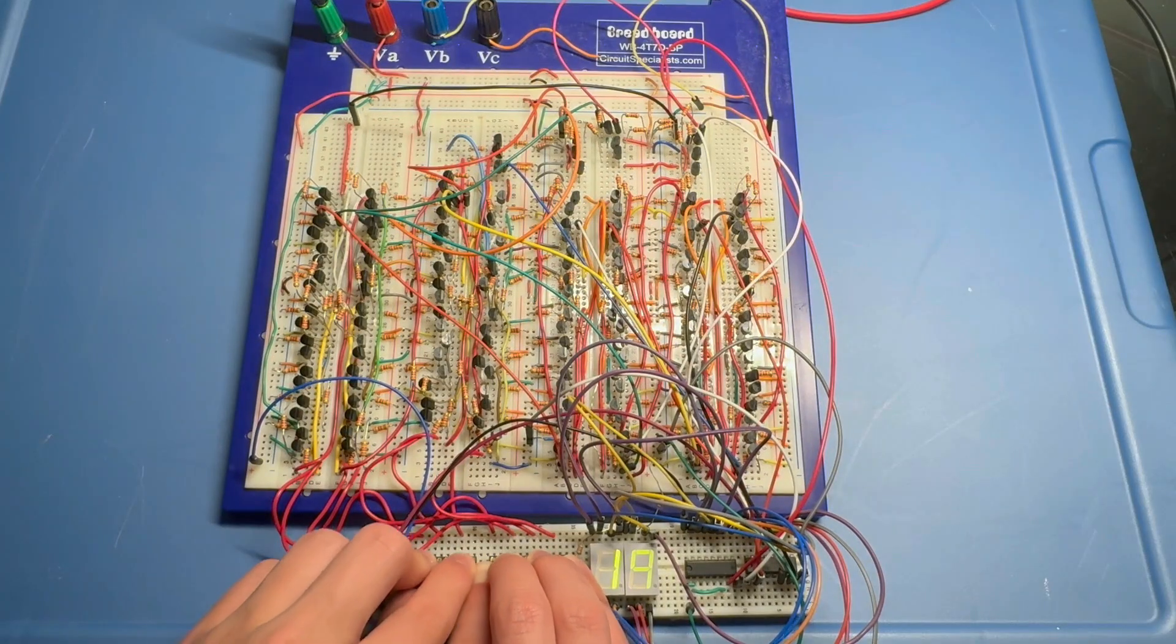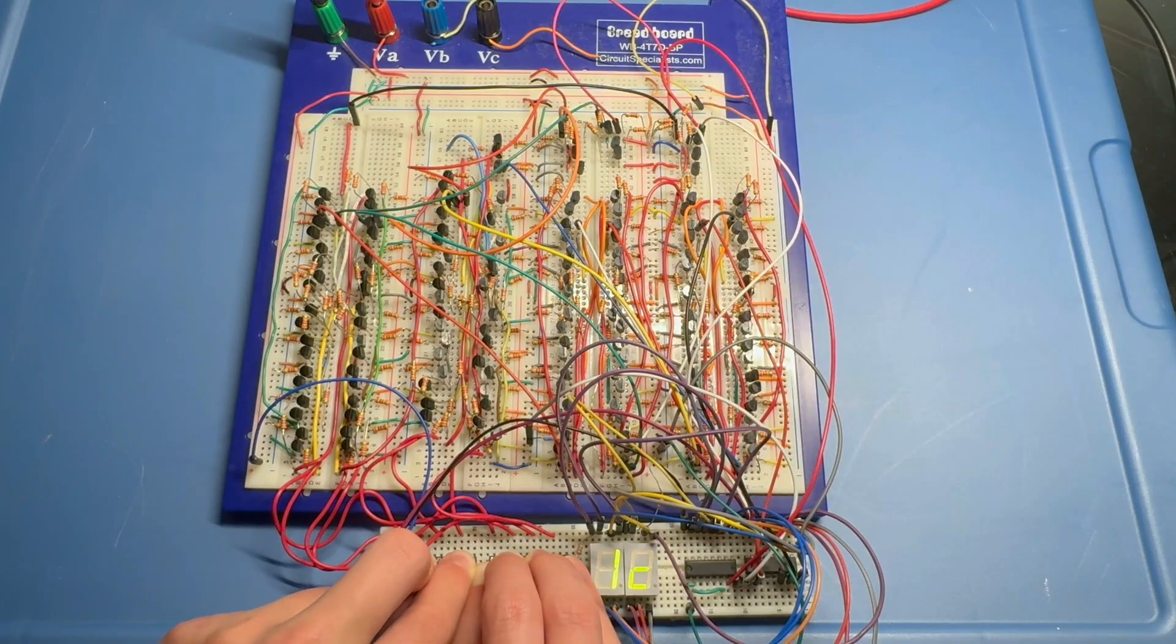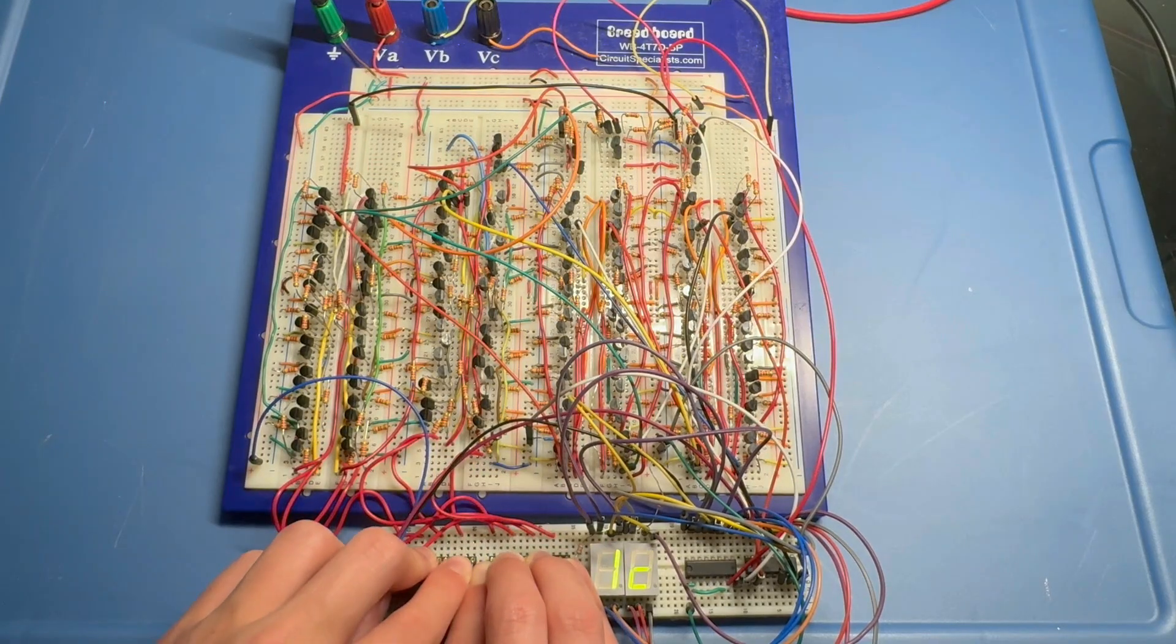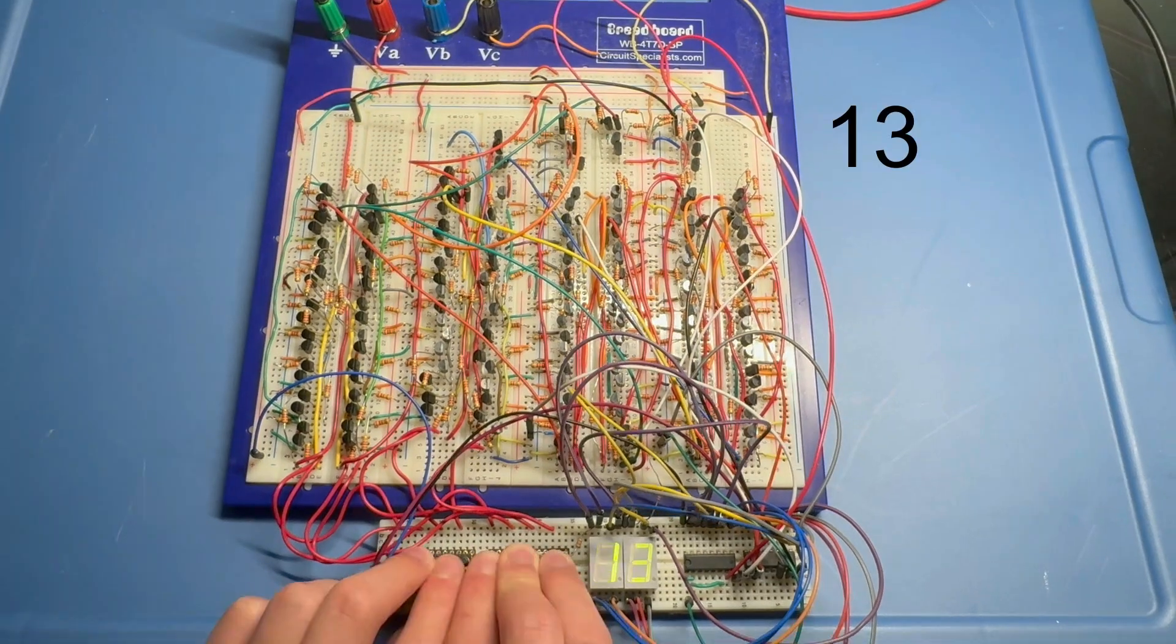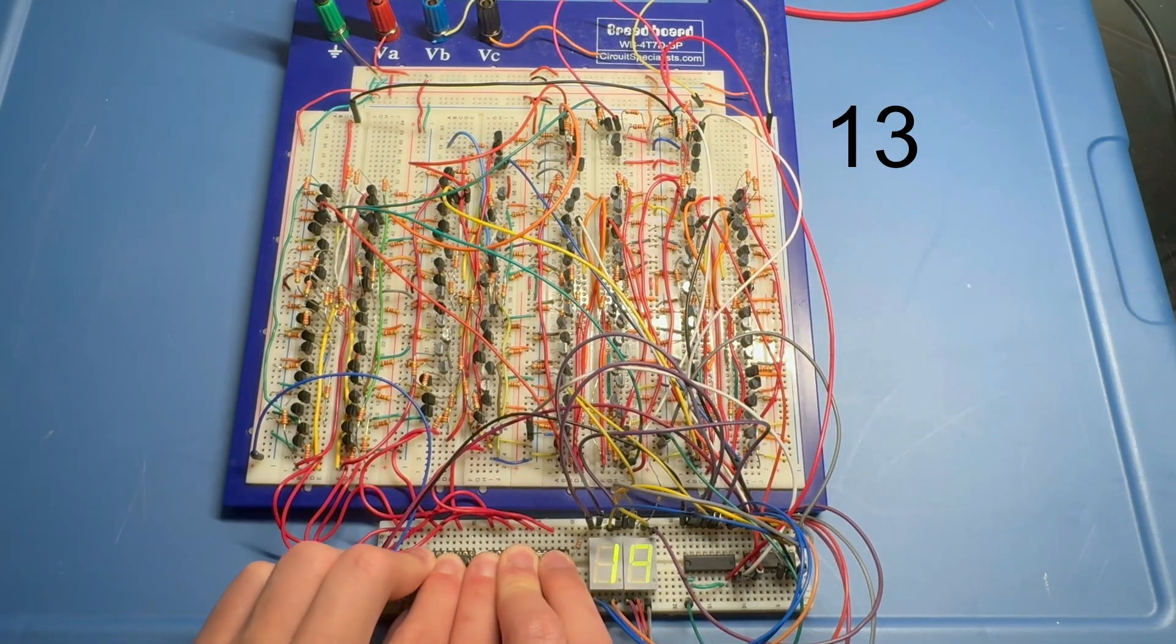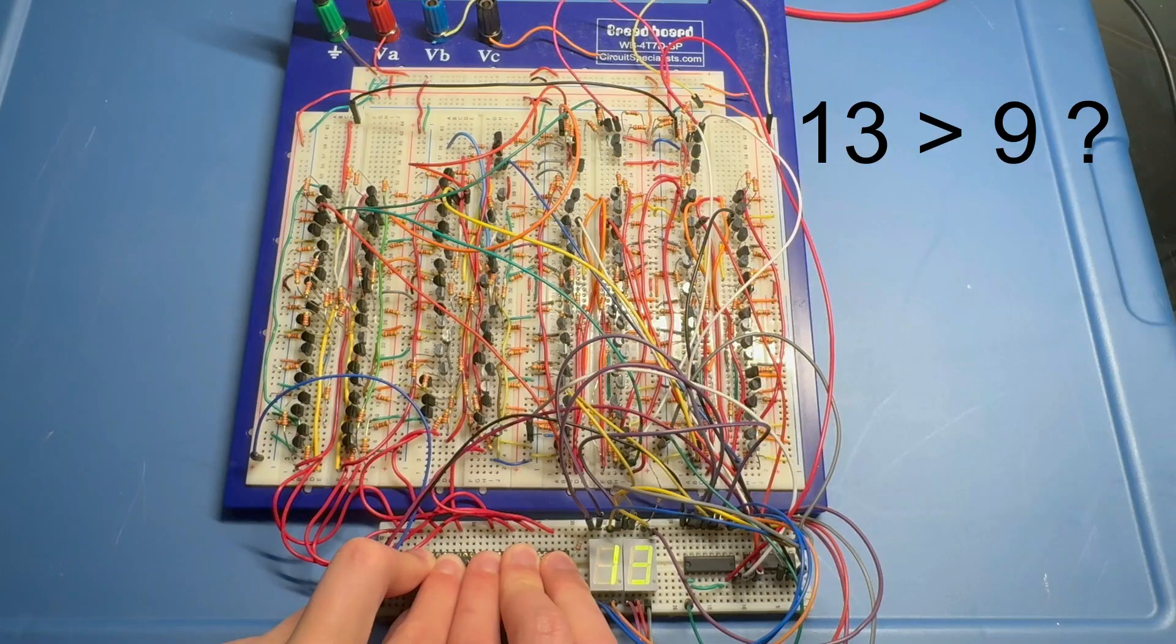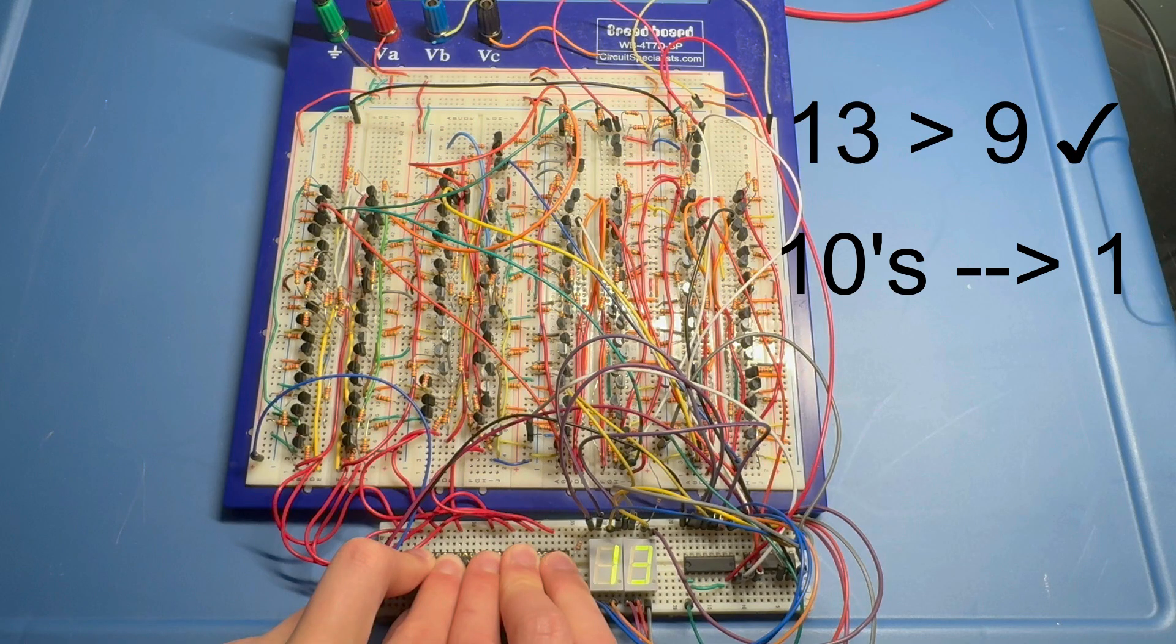This puzzle is a lot tougher for the ones digit, because if our input is over nine, then the display will try to show hexadecimal, which is a lot harder to read. To fix this, we need to subtract 10 from our binary value if the value is greater than nine. Here's an example so that it makes a little more sense. If I want to display 13, then I first need to check if the number is greater than nine. It is, so we need to set the tens place to display a one. The ones place will still try to display 13 though, but it'll be in hexadecimal. So we need to subtract 10 to make the display just say 3.